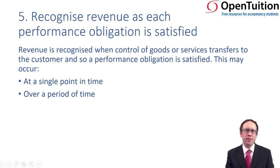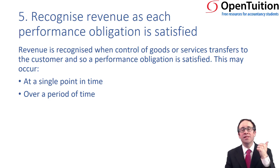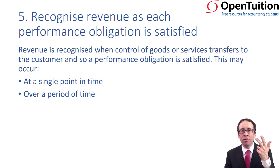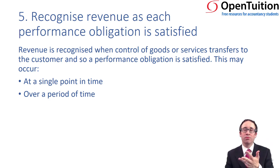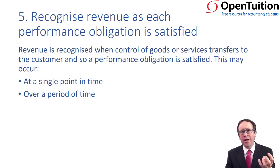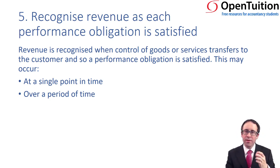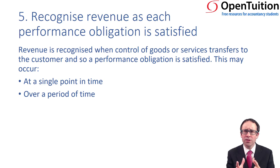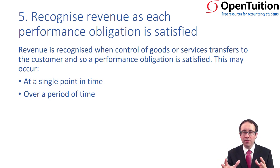So the final piece within the jigsaw — step number five. Remember: step one was to identify the contract, step two was to look at the performance obligations, step three was to look at the transaction price, and step four was to allocate the transaction price across the separate performance obligations. And now we get to recognizing the debits and the credits as we look at recognizing the revenue within the financial statements. What we need to do is look at the different performance obligations and determine whether that obligation is settled at a point in time or over a period of time.